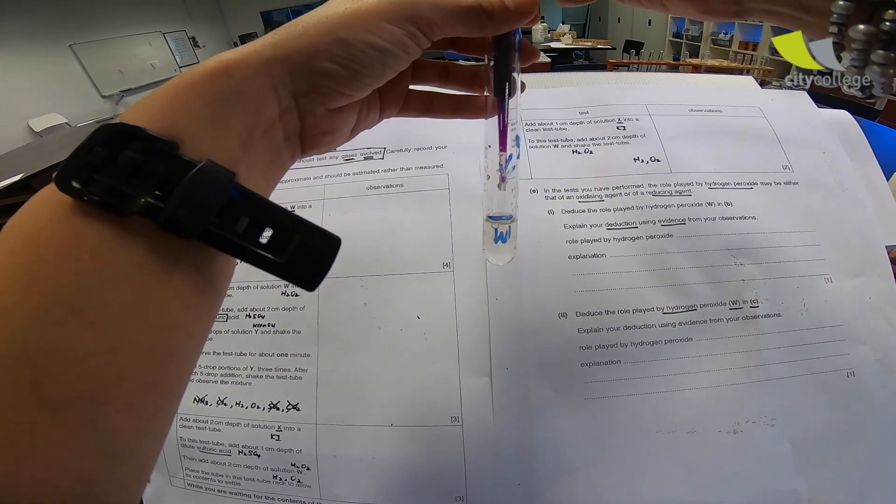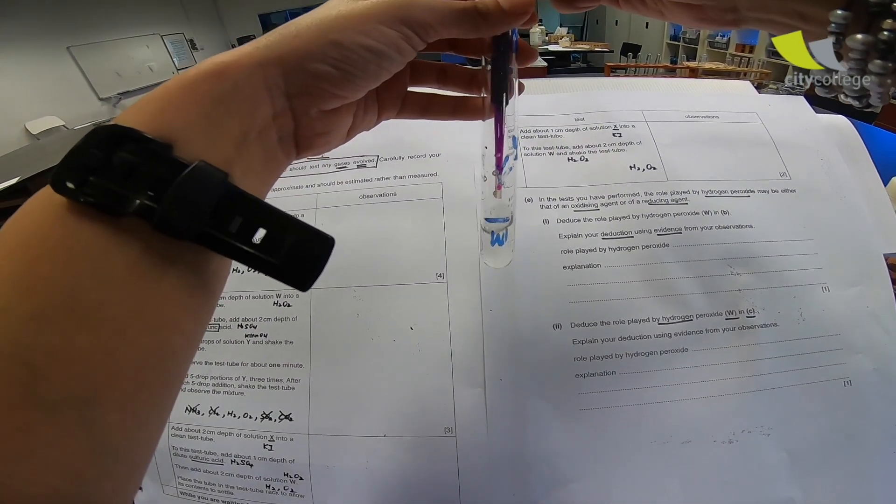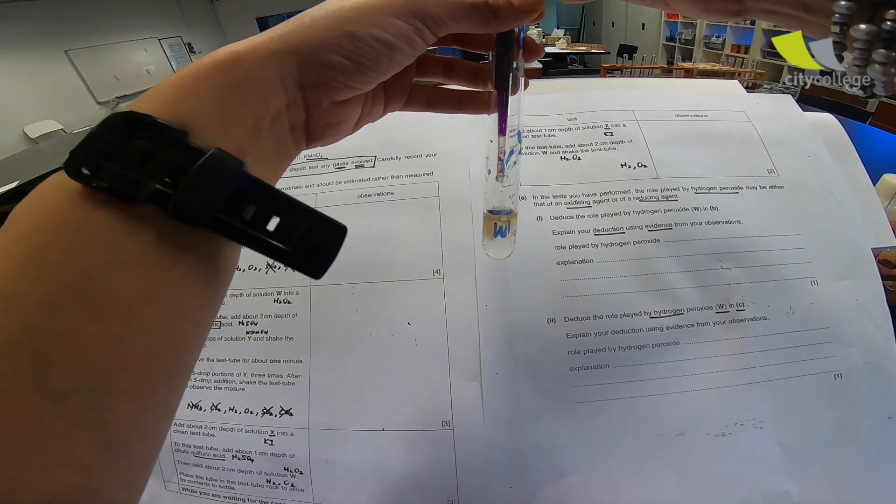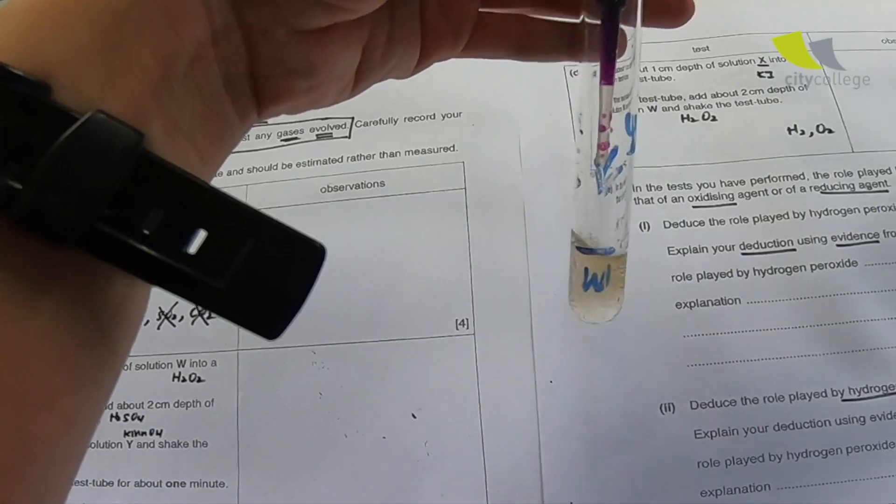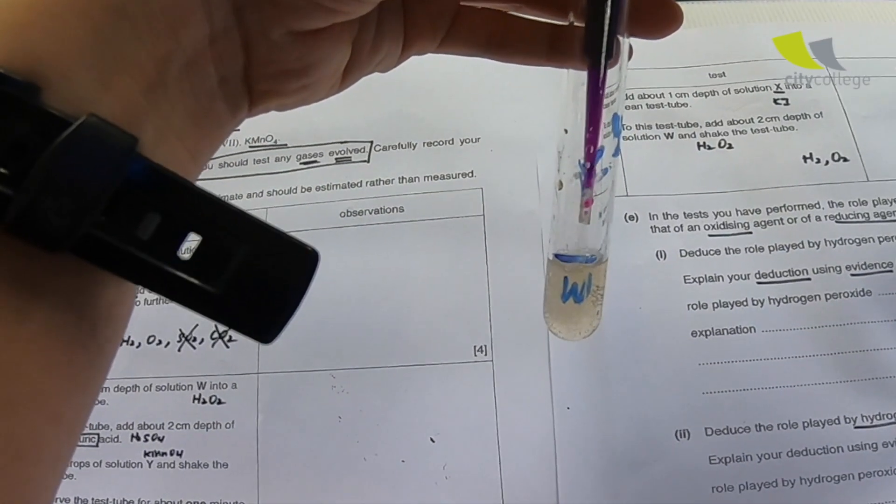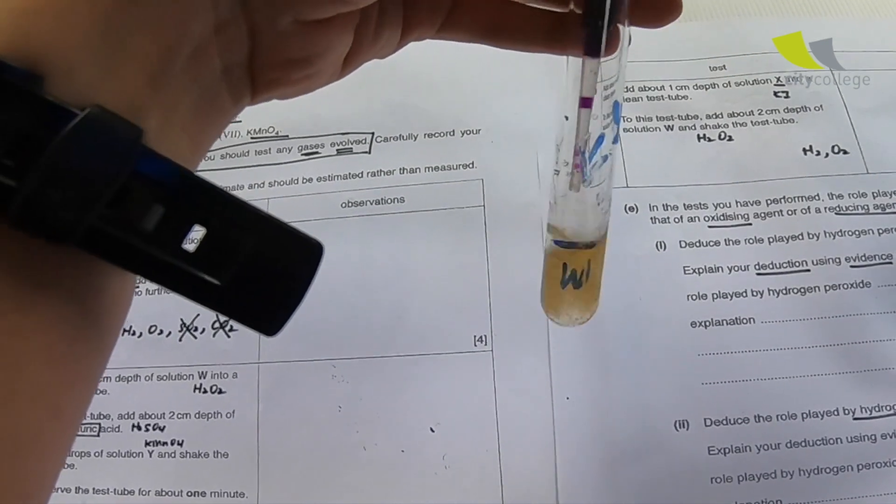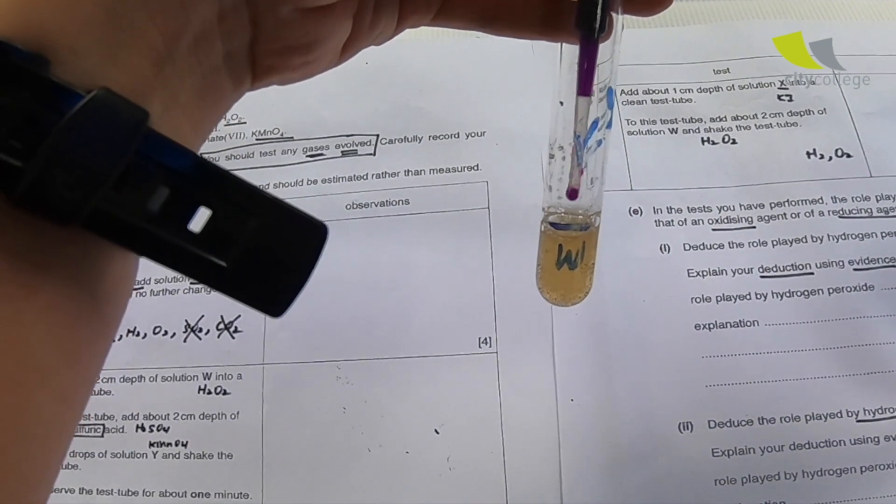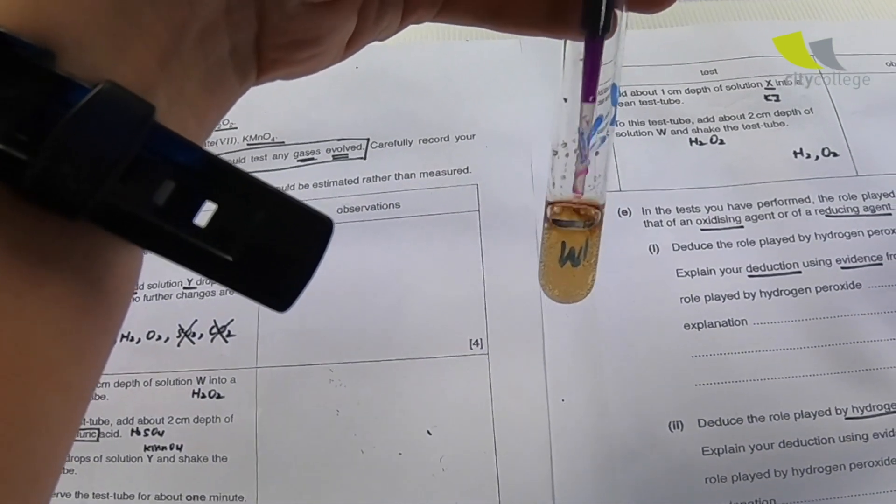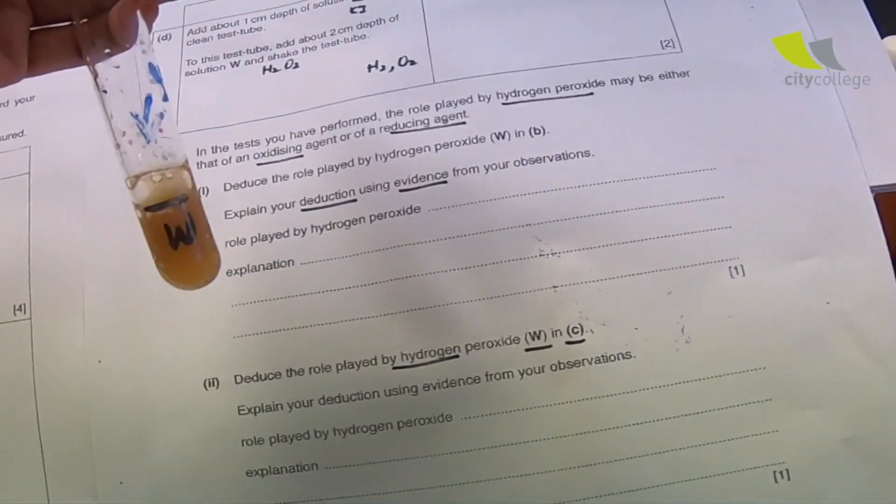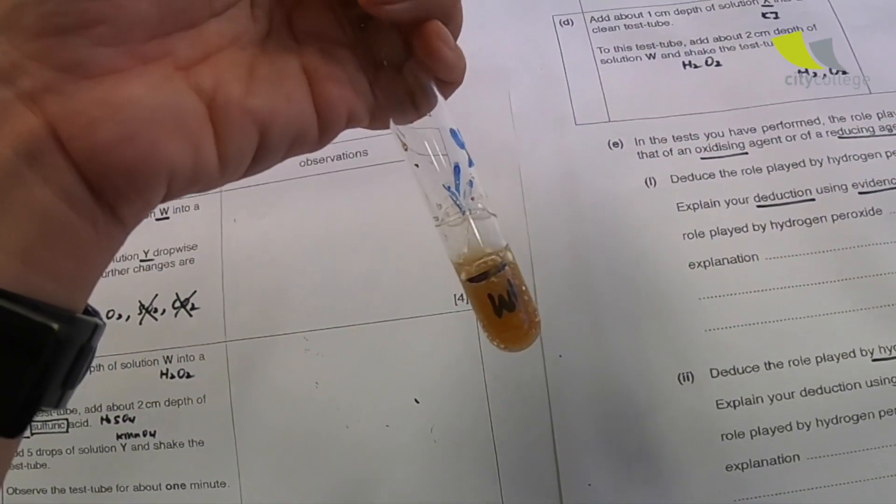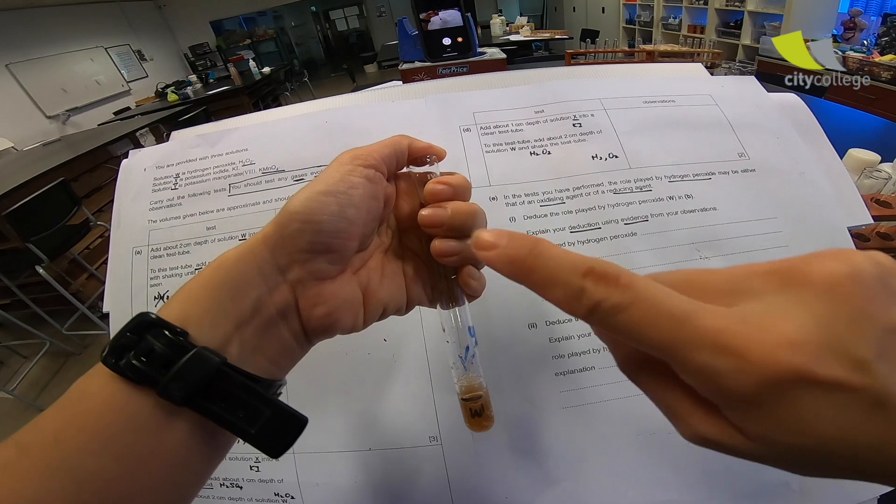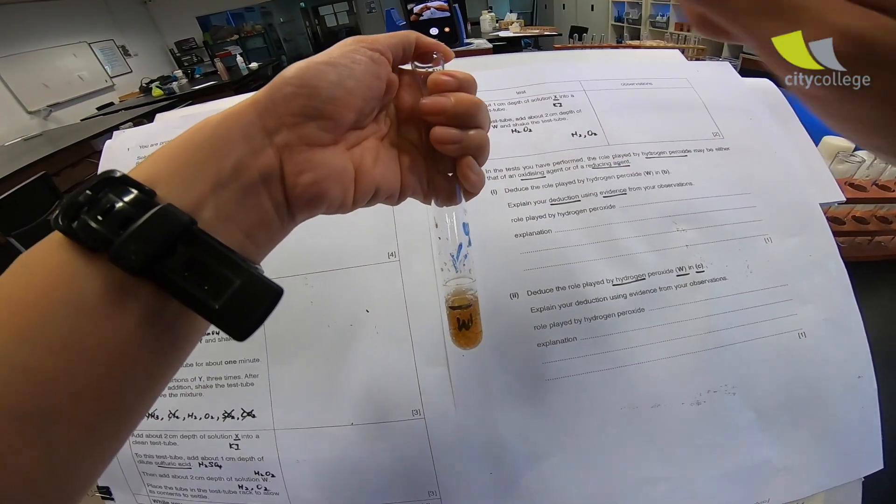The moment I add a drop, you notice that the purple decolorize, but I see a pale yellow solution with effervescent forming. There are gases coming up. More gases. And they say, add until no further changes are seen. Means that, as I add, they should give me a permanent color. A deep yellow solution. I use my thumb to cover to prevent the gas from escaping.